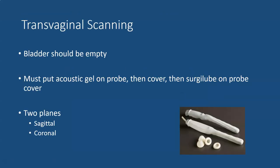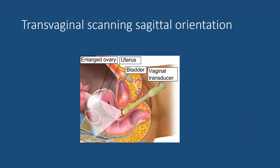Transvaginal scanning. With transvaginal scanning you'd like to have a bladder that is empty. The probe needs to be prepared such that there is acoustic gel placed directly on the probe. A non-latex cover is then placed over it with care to remove any air bubbles, and then additional gel or surgical lube is placed on top of the cover. We will be performing two planes of orientation: sagittal or long axis, and coronal or short axis. The probe will be placed in the vagina, ideally with the tip of the probe touching the anterior lip of the cervix. The ultrasound beam will be emitted into the patient and what one will expect to see is perhaps a small portion of a non-distended bladder, the uterus, the cul-de-sac, and the rectum.